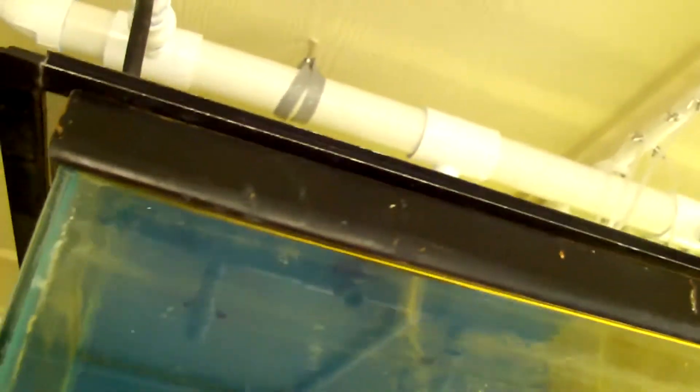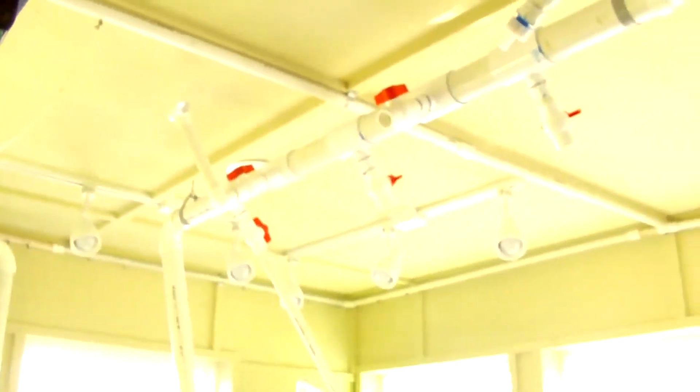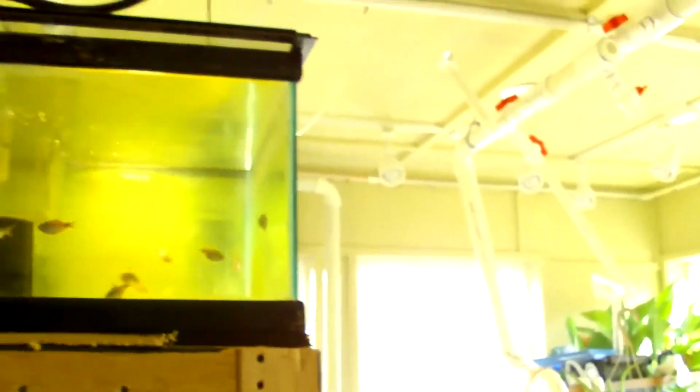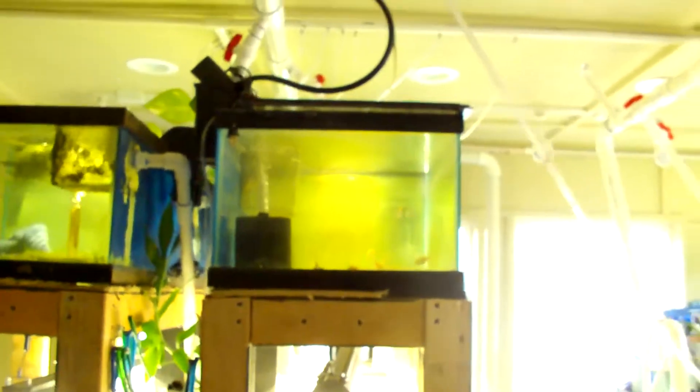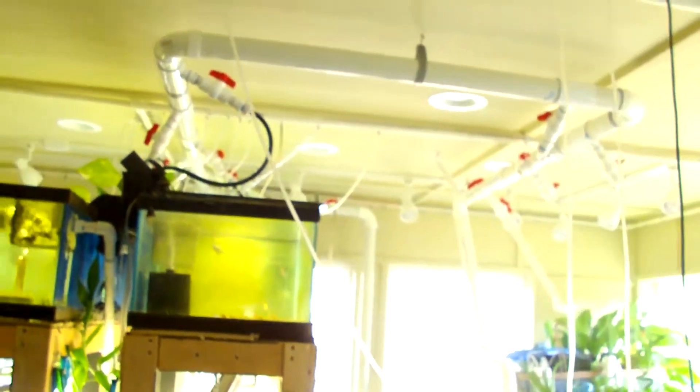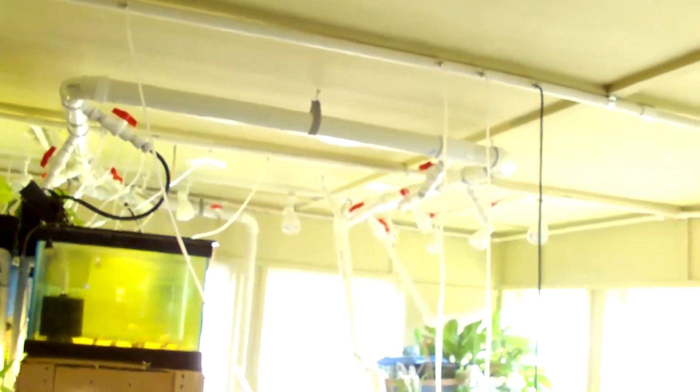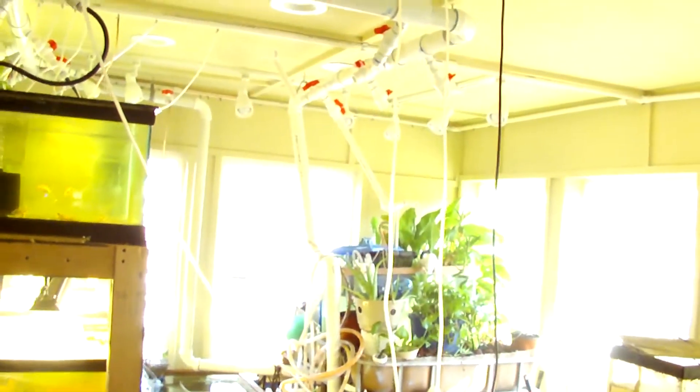And up here I have different valves in which I can adjust the flow of the water going into the tanks. I'm going to step back here, and that way you can see the top and that 2 inch PVC and how it comes from the sump. It goes up towards the tanks, comes over the tanks, comes back around,